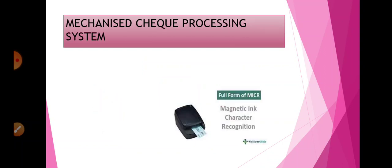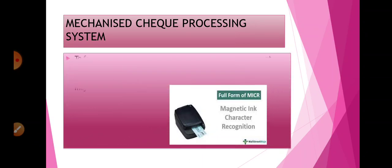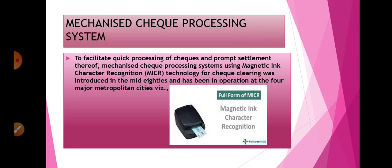Next, a term used is Mechanized Check Processing System. In this system, the dealing with cheques is done in a mechanical form. A mechanical technique is used throughout the entire cheque procedure. This technique is called MICR — Magnetic Ink Character Recognition. It facilitates quick processing of cheques and prompt settlement.